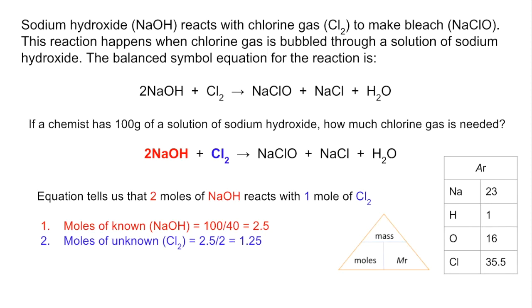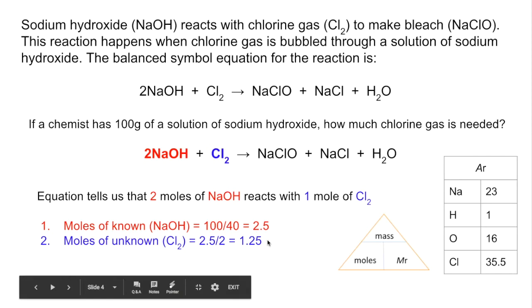Moles of unknown - well we're not going to have the same moles this time because it's not a 1 to 1 ratio. For every mole of sodium hydroxide we only need half as many moles of Cl2 because of the 2 to 1 ratio between these two chemicals. So we need to half the 2.5 to get the moles of Cl2, so that comes out at 1.25 moles.